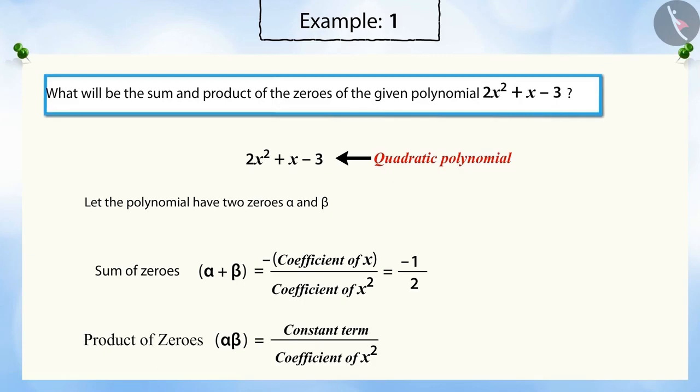Similarly, we know that the product of the zeros of the quadratic polynomial is the ratio of the constant term of the quadratic polynomial to the coefficient of x². Substituting the values of the constant term and coefficient of x² gives the product of the zeros as -3/2.